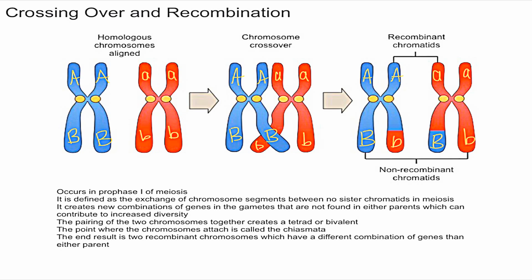After they attach, it creates essentially a four-chromatid structure — think of each half of the X as a chromatid. This creates a structure called a tetrad or a bivalent, and the point at which they attach right over here is called the chiasmata.